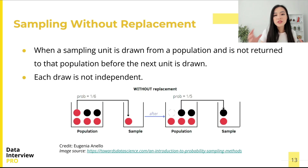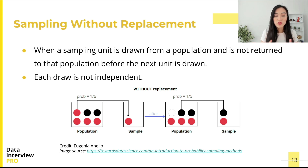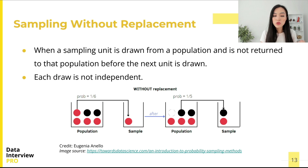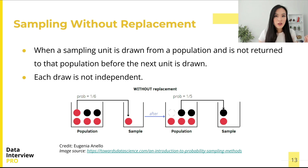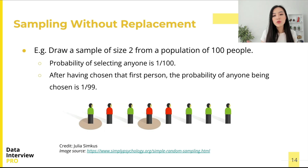In comparison, when a sampling unit is drawn from a population and is not returned to that population before the next unit is drawn, the sampling is said to be without replacement. It means that each draw is not independent, as the size of the pool decreases after each draw. Therefore there's a distinction when sampling multiple times — using sampling without replacement, there's no independence among different draws.